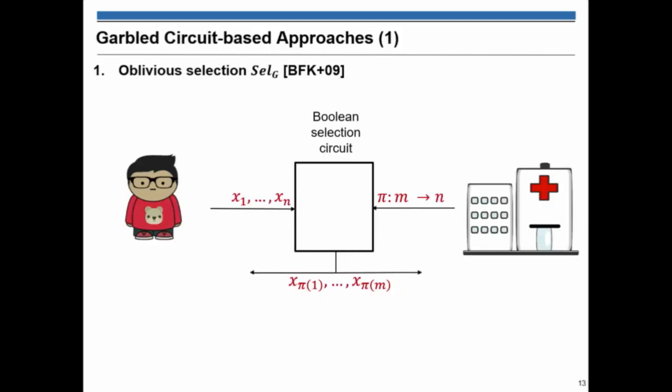Now, let's go to the garbled circuit. The selection in garbled circuit would be with a selection network which could be implemented in a boolean circuit. The way this works is that Bob inputs his input and the hospital just puts a map of the features to the decision nodes. And then, at the end, Bob receives all the selected features.